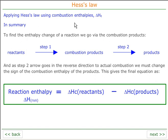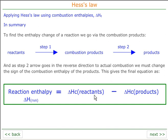To summarise combustion enthalpies: we take the reactants via the combustion products to the products. Step 1 must always be the combustion enthalpy, and step 2 must always be the reverse of the combustion enthalpy of the products. In other words, the reaction enthalpy equals the enthalpy of combustion of reactants minus the enthalpy of combustion of the products.